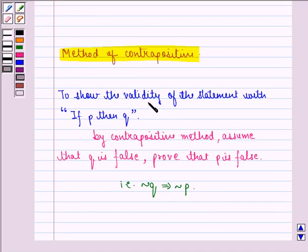Now to show the validity of the statement with if P then Q by contrapositive method, assume that Q is false, prove that P is false. That is, Q is not true implies P is not true.